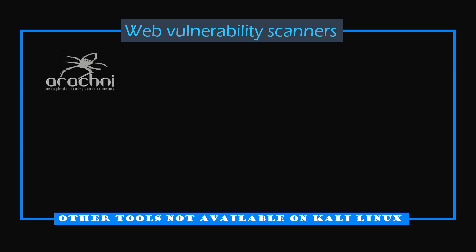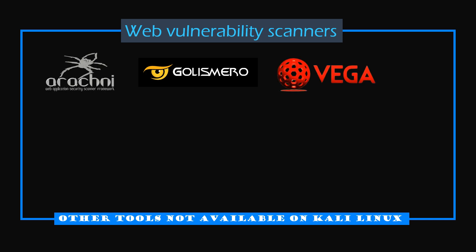Arachnid is an open-source Ruby framework designed for response validation and reducing false positives during security assessments. Golismero is a tool that maps web applications and detects common vulnerabilities, saving results in various formats for further analysis and remediation. VEGA is a GUI-based, cross-platform, Java open-source vulnerability scanner offering extensive user customization options for comprehensive security assessments.